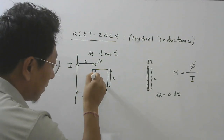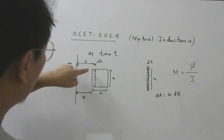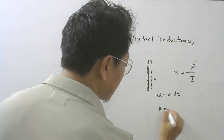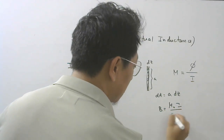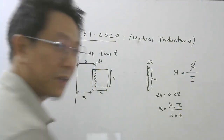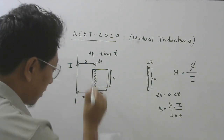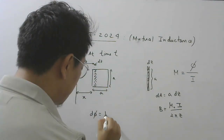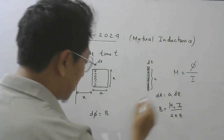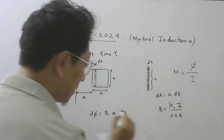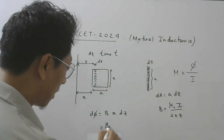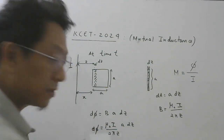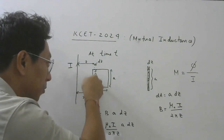All points of this small area are at distance Z from the wire. So the magnetic field at this point is μ₀I / 2πZ. The flux through this small area, dΦ, equals B times the area = (μ₀I / 2πZ) · A·dZ. This is the flux passing through this small area.